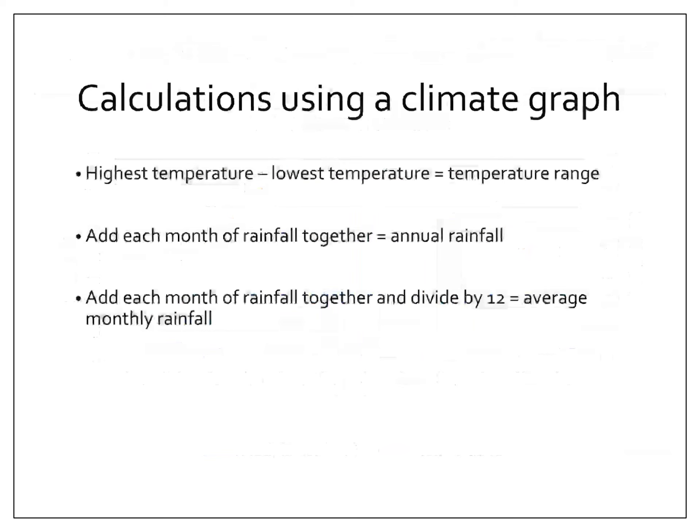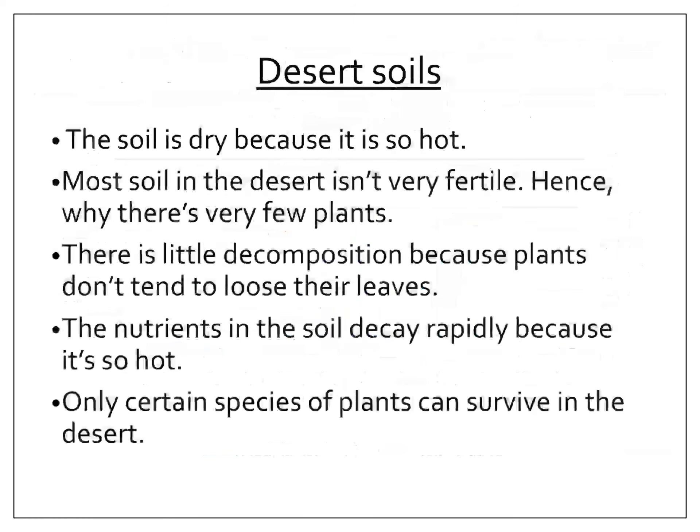Then we can work out the average monthly rainfall. To do this, we take the annual rainfall and divide it by 12 because there are 12 months. Our annual rainfall was 352 divided by 12, which means our average monthly rainfall is 29.3 millimetres, to one decimal place.